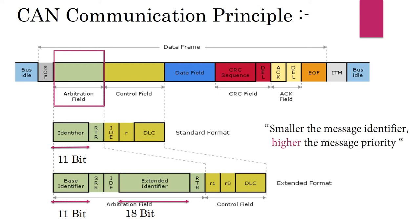Smaller the message identifier, higher the message priority. Unlike I2C, there is no node identification used in CAN communication, which makes it very flexible to add or remove a node from the network.